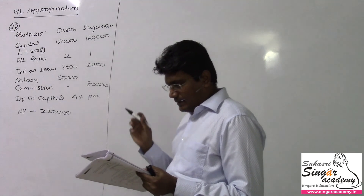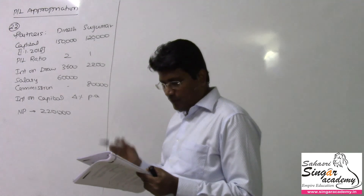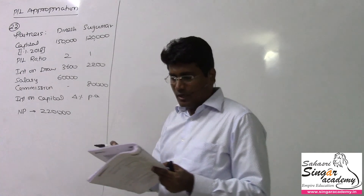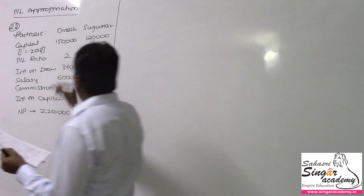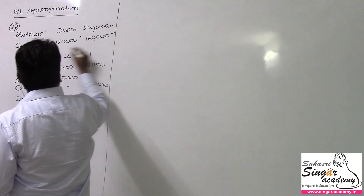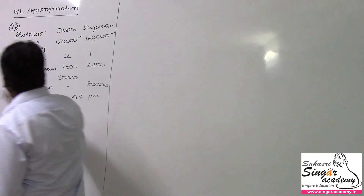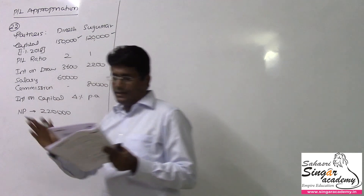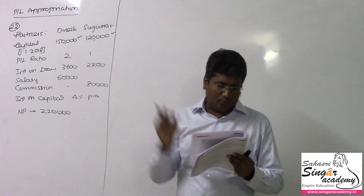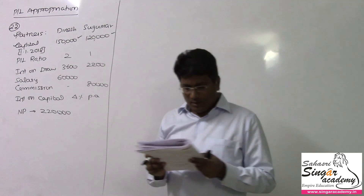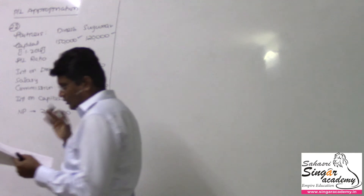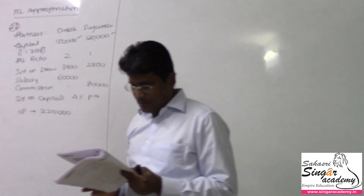The agreement provided that Dinesh contributing 1 lakh 50,000 and Sugumar contributing 1 lakh 20,000 as capital as on the date of commencement. Profit and loss should be shared between these two partners in the ratio of 2 is to 1.